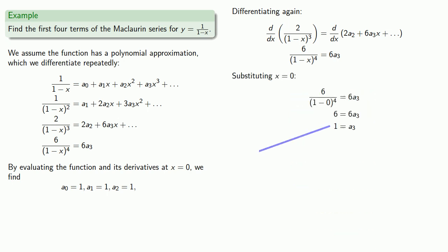And so by evaluating the function and its derivatives at x equals 0, we find the values of the coefficients a₀, a₁, a₂, and a₃. And so we can write down the first four terms of the Maclaurin series for 1 over 1 minus x.